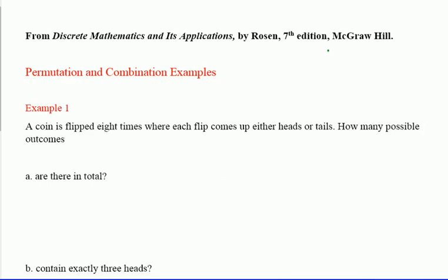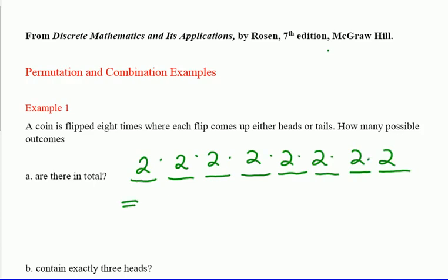The idea here is that we want to use the fundamental counting principle. So if I have eight flips, I'm gonna have eight different slots: one, two, three, four, five, six, seven, eight. And the number of outcomes in each of these slots is just two, either heads or tails. I multiply that all up using the fundamental counting principle, I get 2 to the eighth.